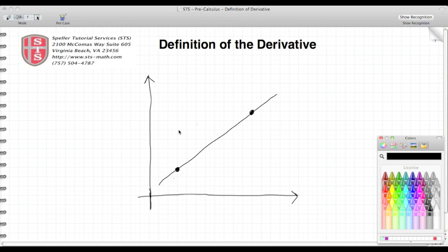Welcome back to Speller Tutorial Services. Today we're going to talk about the definition of the derivative, and plainly stated, the derivative is just a slope of a line. So let's take a look at this line that I have.